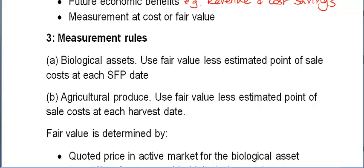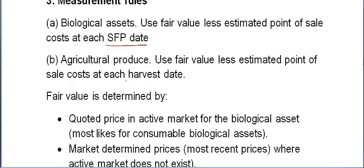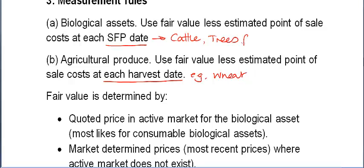How do we measure them? If they are biological assets, we value them at the SFP date — remember, biological assets include things such as trees. If they're agricultural produce, we value them at the harvest date. For example, wheat is harvested once or twice a year, whereas cattle take a few years to grow before going to market, and trees grown for logging similarly take several years to mature.